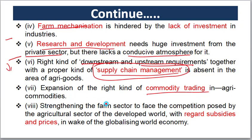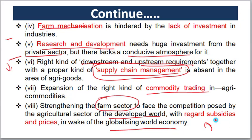Next is strengthening the farm sector in the globalizing world economy. We need to improve the competitiveness of Indian agri-products. The government should provide appropriate subsidies and fix the farm sector's pricing issues. We need to do a proper compilation of agriculture products and address subsidy structures for government and prices in the global context.